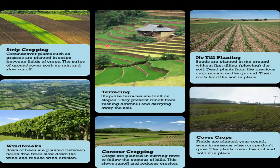Terrace farming involves cutting the land on slopes into steps to retain water. No-till planting means once the first tilling is carried out, the dead plants are not removed from the ground. Windbreaks are trees grown between fields that slow down the wind and reduce wind erosion. Contour cropping means crops are planted in curving rows following the contour of the land, which slows runoff and reduces soil erosion. Cover crops are planted year-round even in off-seasons; the plants cover the soil and hold it in place.